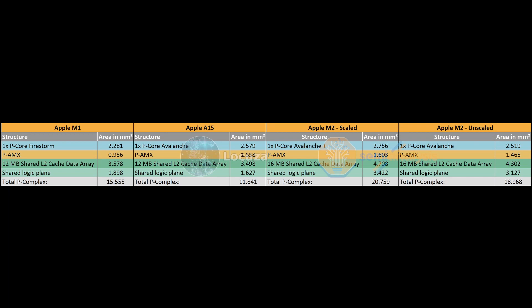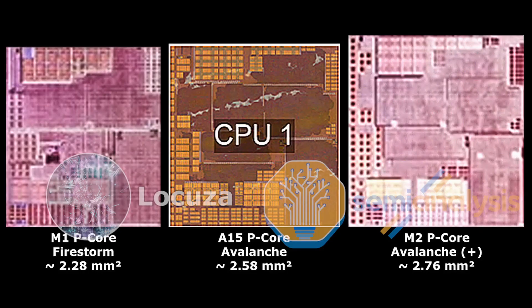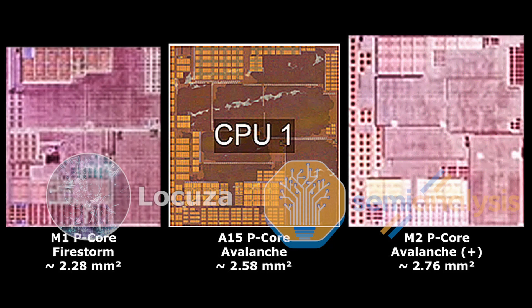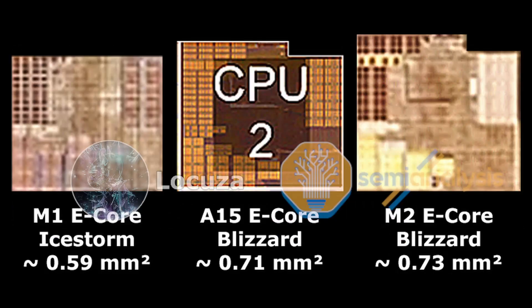One very interesting change is that the ROB appears smaller on the Avalanche core, which is found in A15 and M2, versus the Firestorm core, which is found in M1 and A14. This is odd because Apple had the largest ROB in the industry by far, given they have the widest, highest IPC core in the industry by far. So they sort of stepped back for efficiency.